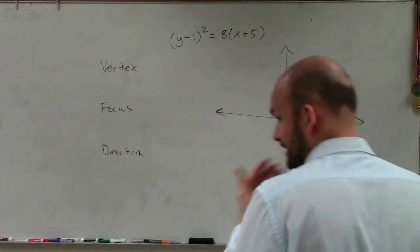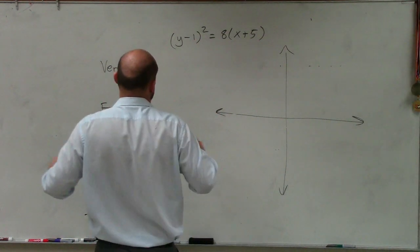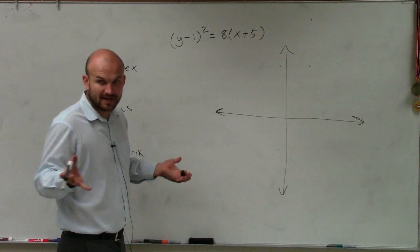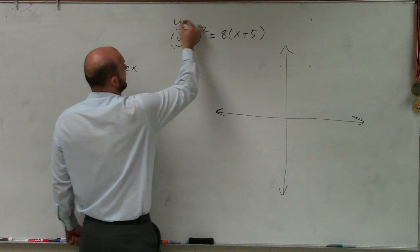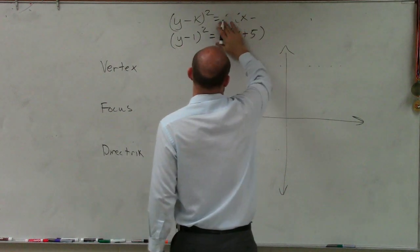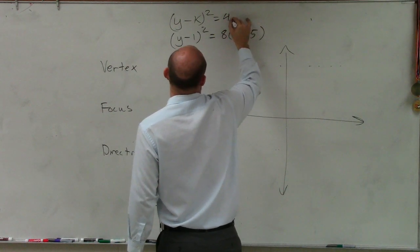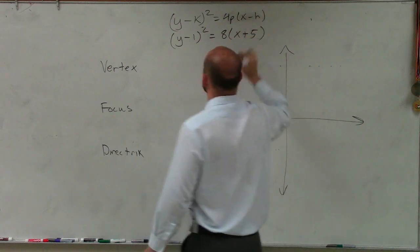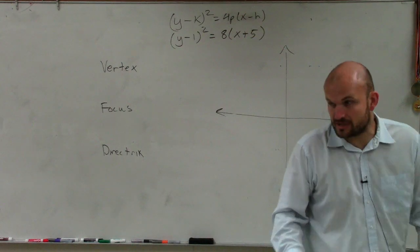When I'm doing something like this, the main important thing is our standard form for our conic section. So we have (y - k)² equals 4p times (x - h). That's the equation I gave you guys.